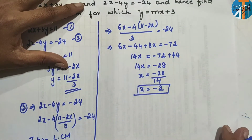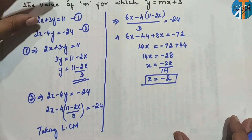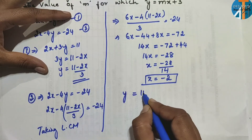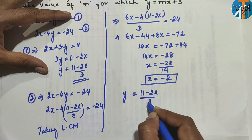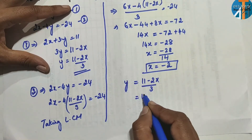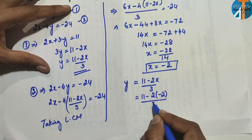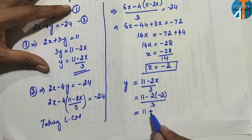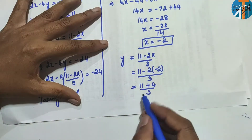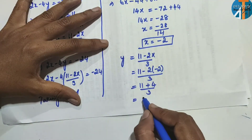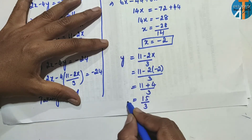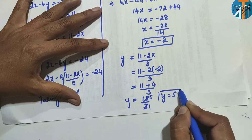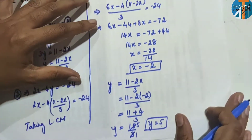The value of x is −2. Now substitute x = −2 into y = (11 − 2x)/3. So y = (11 − 2 × (−2))/3 = (11 + 4)/3 = 15/3. Therefore y = 5. So we have x = −2 and y = 5.